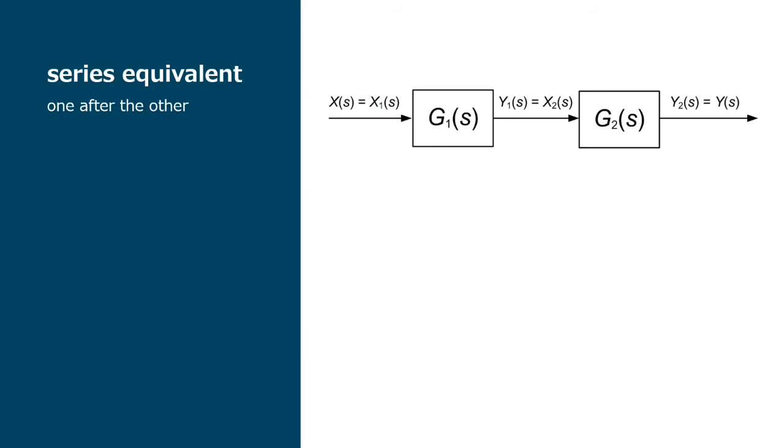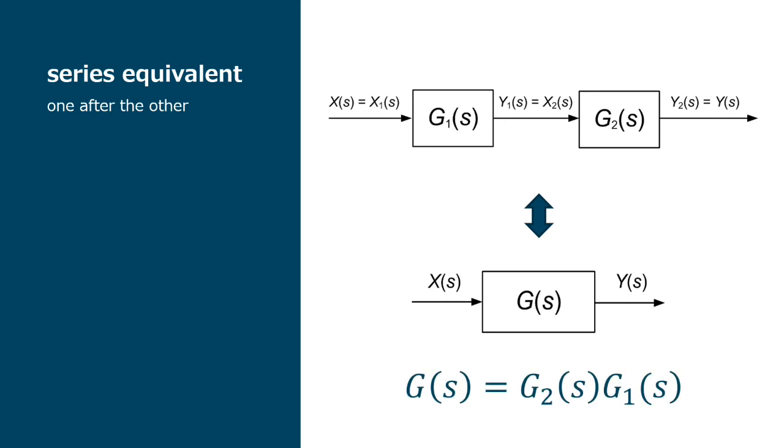First case, when we have two blocks in series, where the output of the first is the input of the second, we can replace this series by its equivalent where the resulting transfer function is the product of the two transfer functions. I leave the demonstration as an exercise to you.